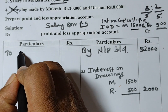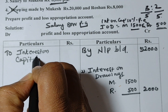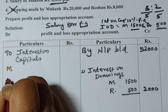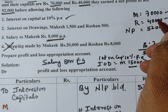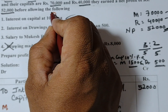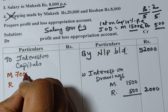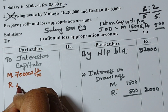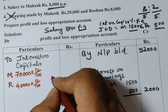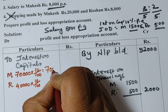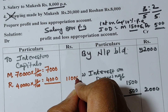On the debit side, the first entry is 'Interest on Capital.' There are two partners: Mukesh with capital rupees 70,000 and Roshan with capital rupees 40,000, and interest on capital is 10% per annum. So 70,000 × 10% = rupees 7,000 for Mukesh, and 40,000 × 10% = rupees 4,000 for Roshan. Total interest on capital is rupees 11,000.